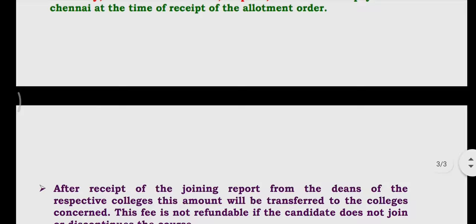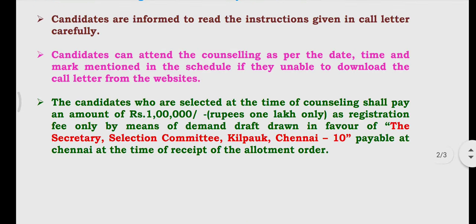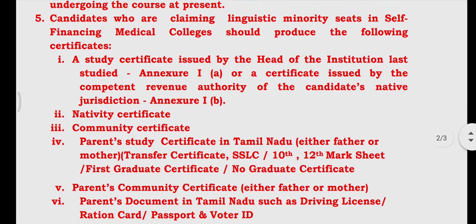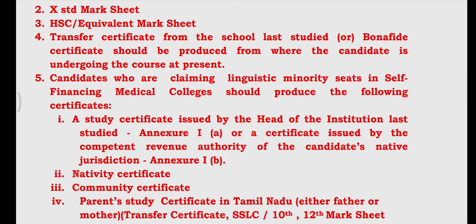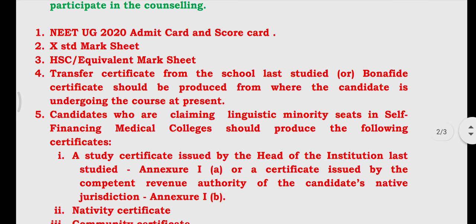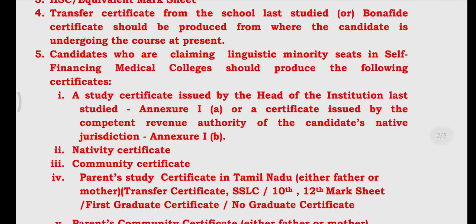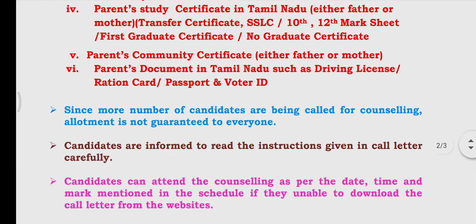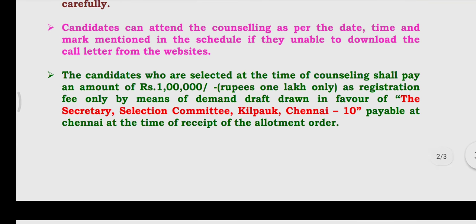So the most important documents required are: DD, IRB, UG NET card, scorecard, 10th, 12th, and 11th mark sheets, parent certificate, Community Certificate, Native Certificate, and the Linguistic Declarations claim certificates. You can submit them, then auto-select, and pay fees for the first time.